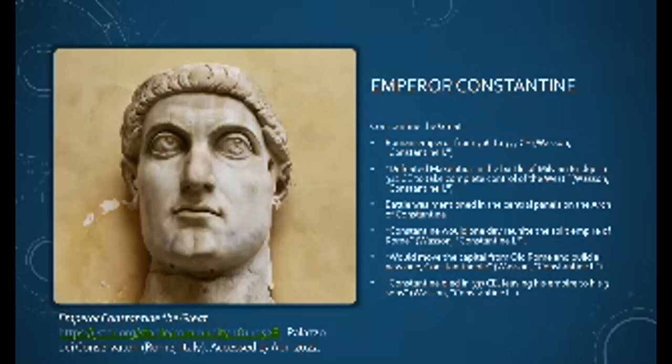In 337 CE, Constantine fell ill and died. He had ruled for 31 years. He was buried at the Church of the Holy Apostles in Constantinople, leaving his empire in the hands of his three sons: Constantine II, Constantius II, and Constance.